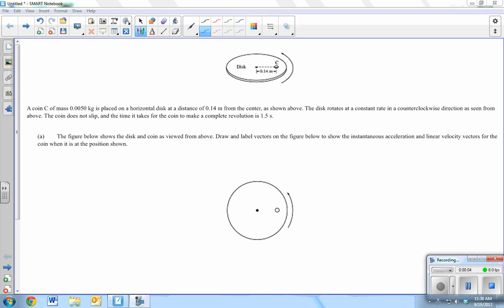All right, what we've got here is a coin on a horizontal disc, which is a distance of 0.14 meters from the center. The disc rotates at a constant rate in the clockwise direction as seen from above, and the coin doesn't slip. And the time it takes for a complete revolution is 1.5 seconds.